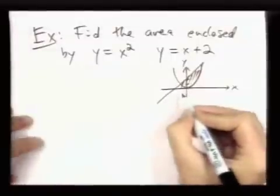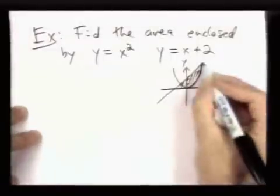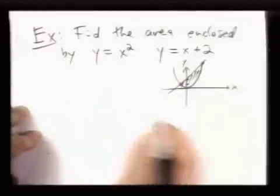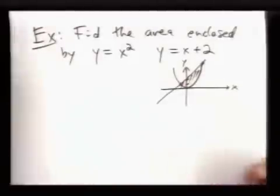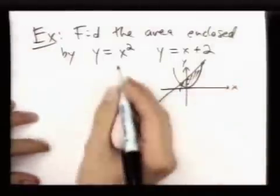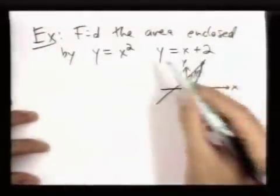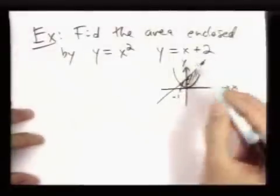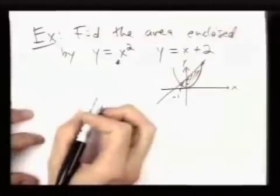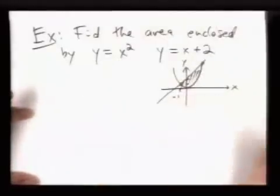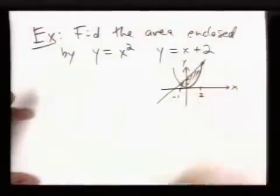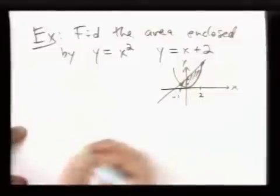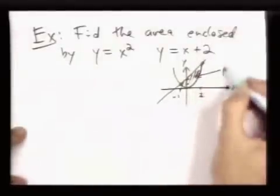We should maybe figure out what these points of intersection are. That's just a matter of seeing when x squared is equal to x plus 2. If you figure that out or just make some good guesses, you'll see that intersect when x is negative 1. Because if I plug negative 1 in here, I get 1. If I plug negative 1 in here, I get 1. And they also intersect when x equals 2.